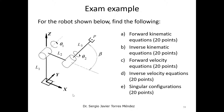In this video we are going to solve this example for the exam. We have this serial robot, and at first sight we can see that we have two degrees of freedom: theta1 and theta2. We also have these parameters: L1, L2, beta, and L3. The problem is asking to solve for the forward kinematic equations, inverse kinematic equations, forward velocity equations, inverse velocity equations, and the singular configurations.